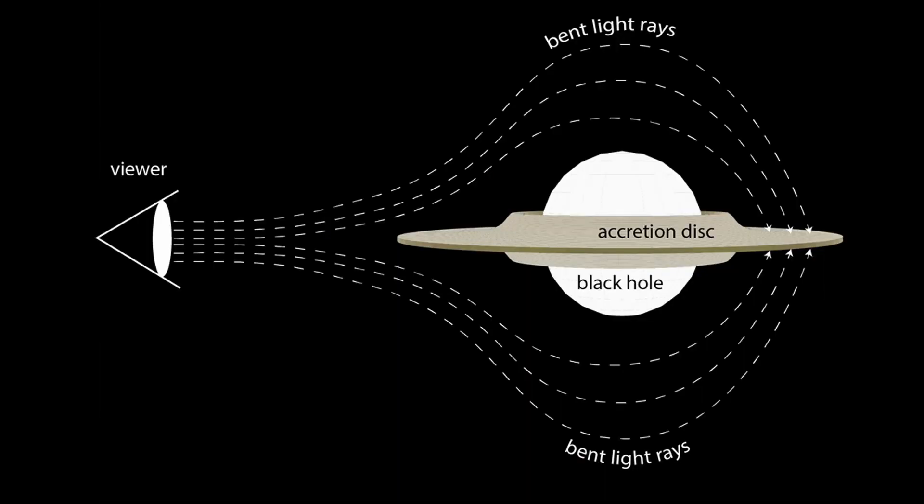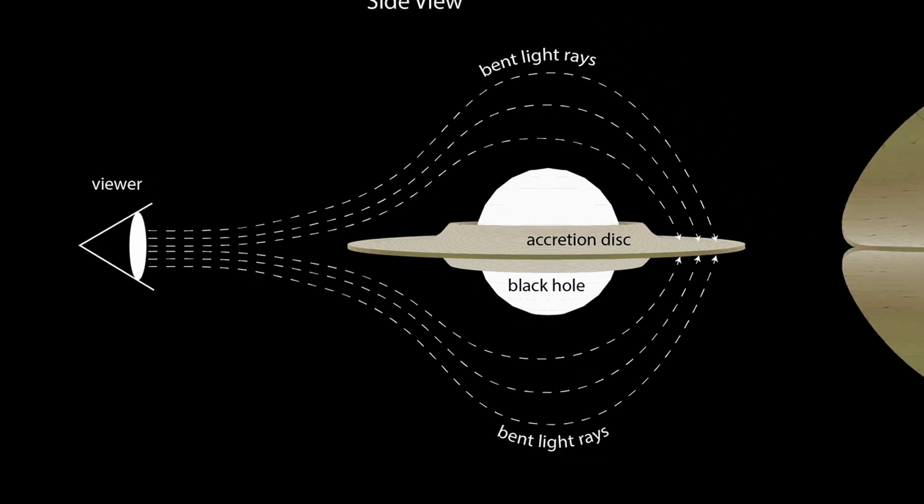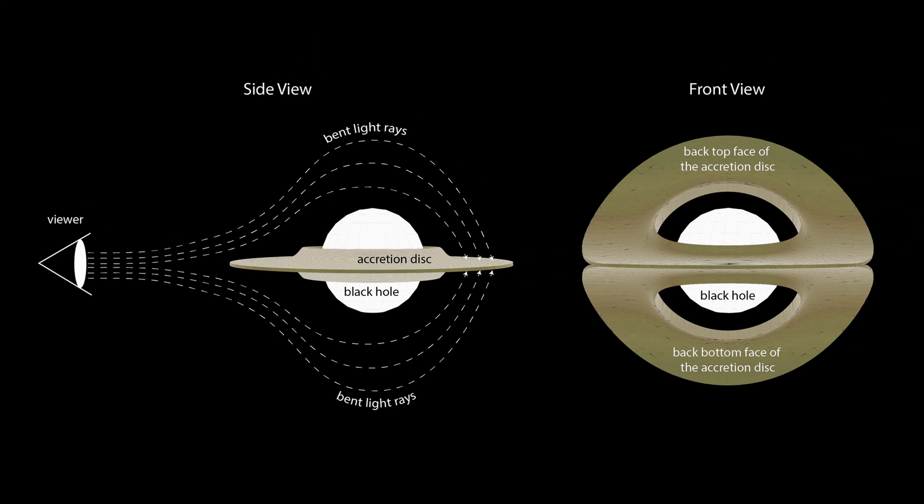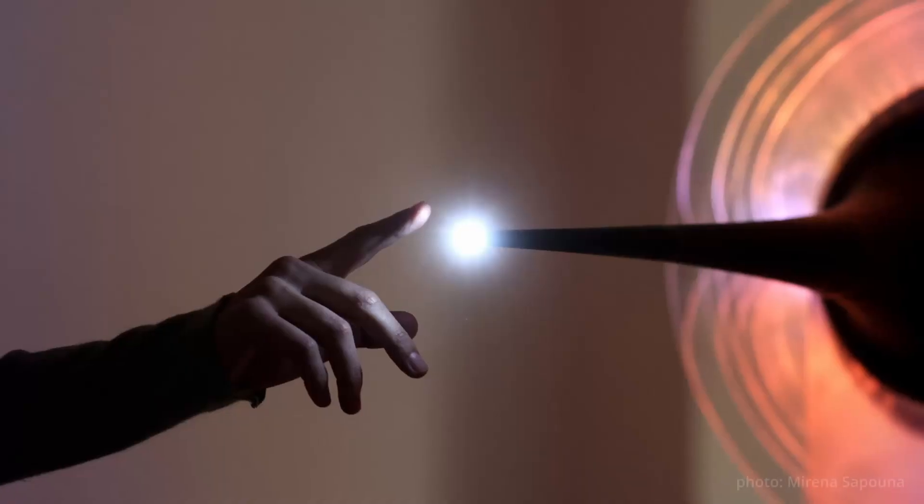Two concepts of black hole theory deeply affected the creation of this sculpture. The first was the distortion of space that occurs around a strong gravitational field such as that of a black hole, and the second was the singularity, the center of the black hole.